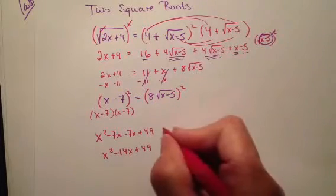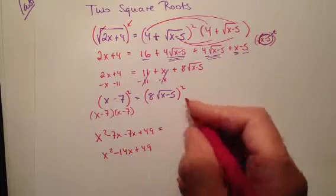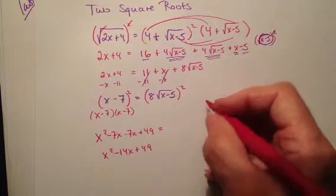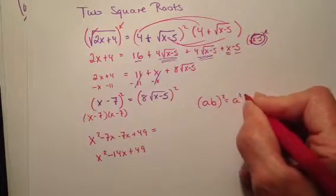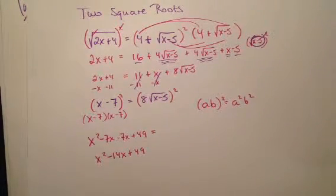That's the left side. And on the right side, these two things are just being multiplied. So if I have two things being multiplied and I square them, isn't that just going to be a squared, b squared?